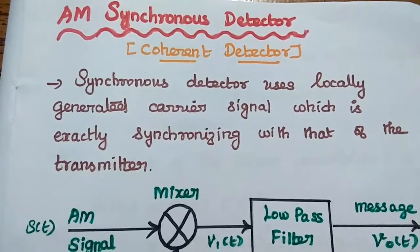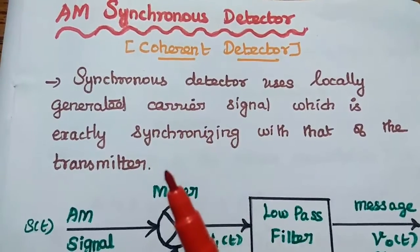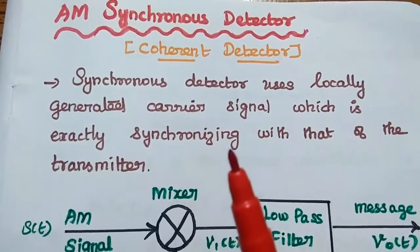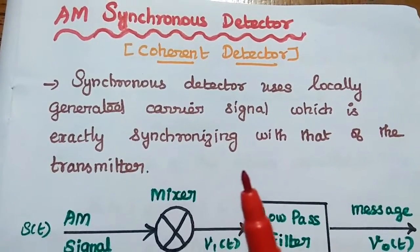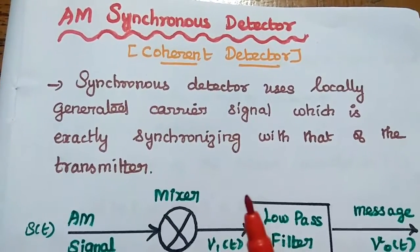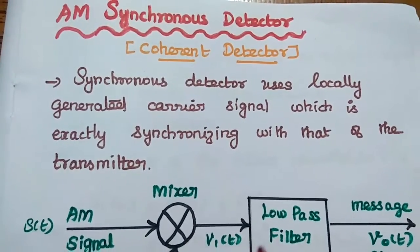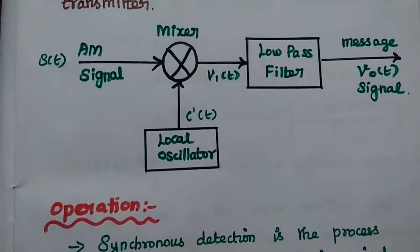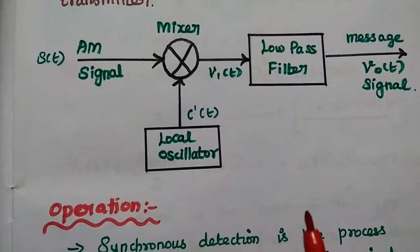The AM synchronous detector is also called as a coherent detector. A synchronous detector uses a locally generated carrier signal which is exactly synchronized with that of the transmitter side. Both the carrier signals at the transmitter side and receiver side should be synchronized. That is why it is called a synchronous detector. This is the block diagram of the synchronous detector.